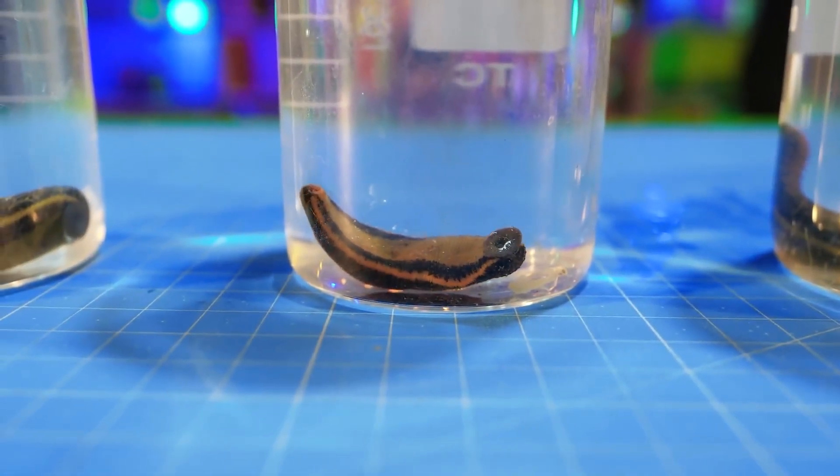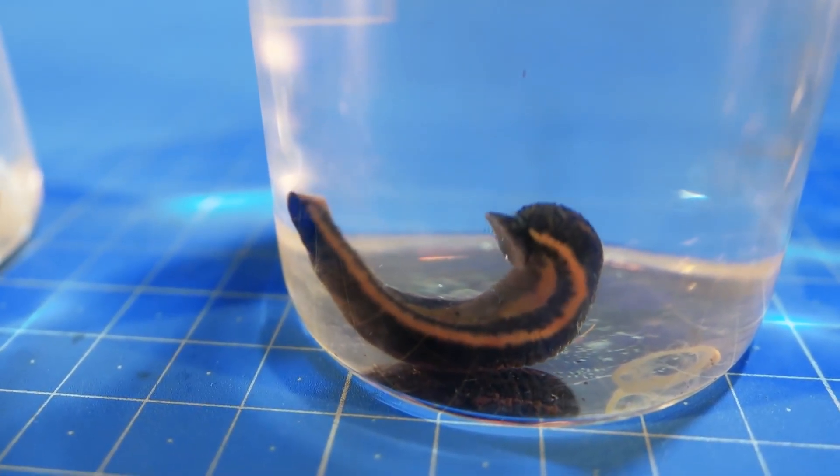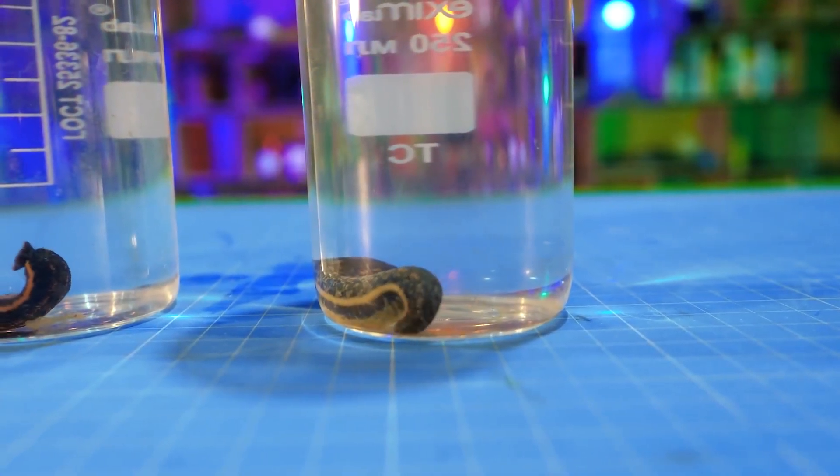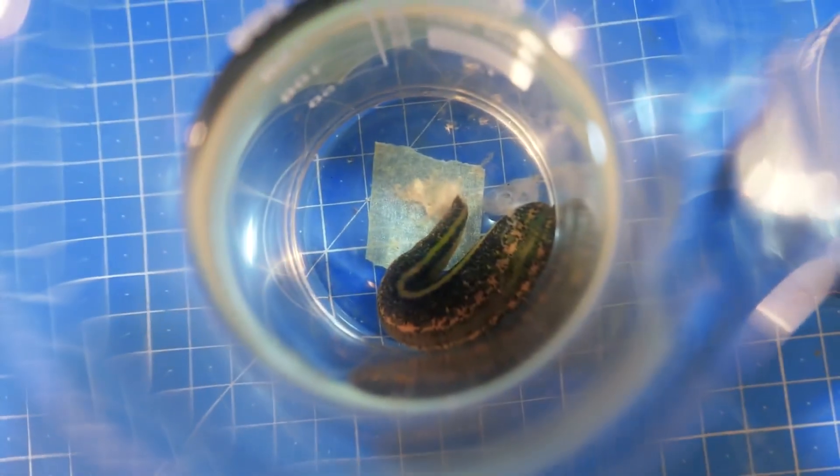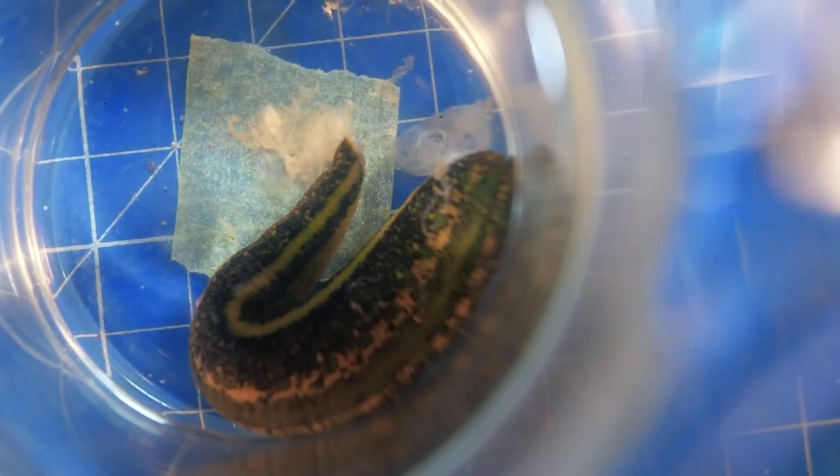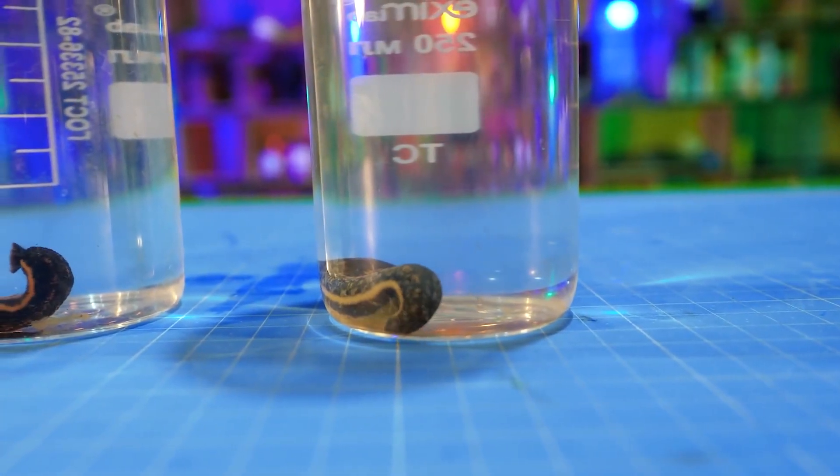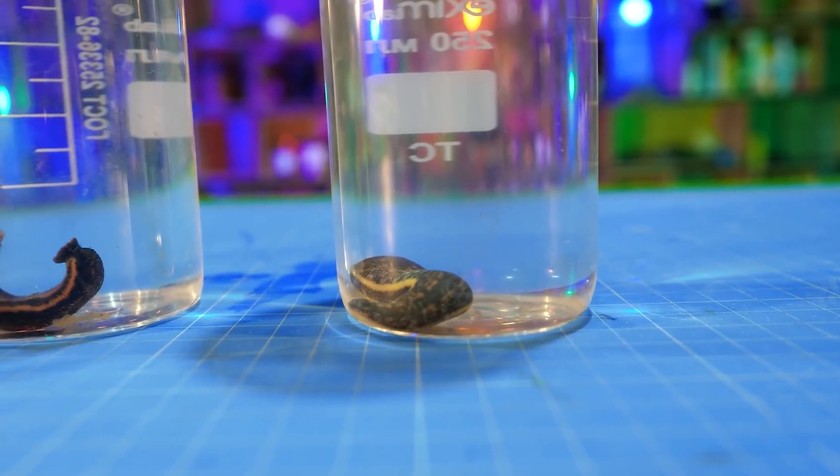By the way, while we were looking for the blood of an inveterate smoker, we were simultaneously observing the condition of the participants in the experiment. Immediately after the meal, the leech that drank Vitya's blood lay down to rest. Apparently, no special changes took place.